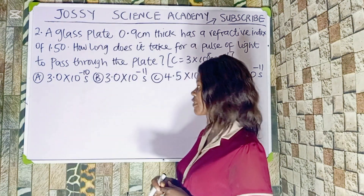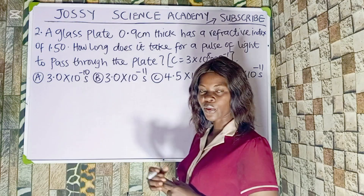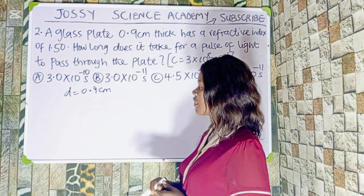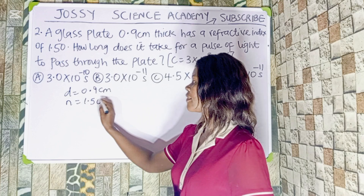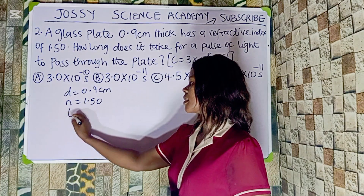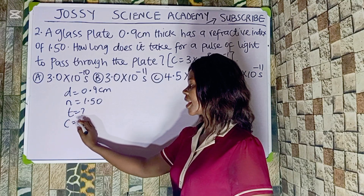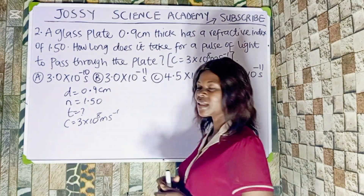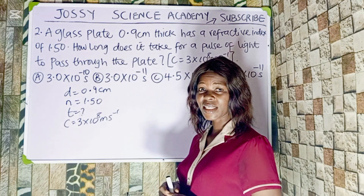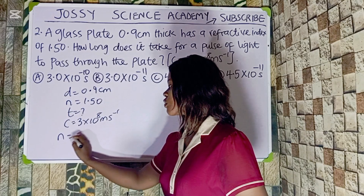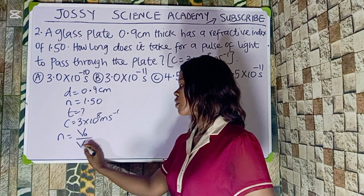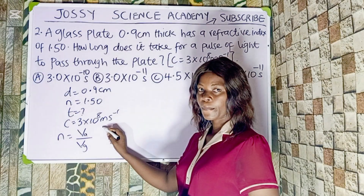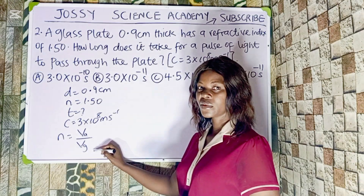For us to solve this, we note the parameters given. The thickness of the glass block is our distance, D = 0.9 cm. The refractive index N = 1.50, and we need to find the time. The speed of light in air is given as 3×10⁸ m/s. We must understand that the refractive index N equals the velocity of light in air over the velocity of light in glass.